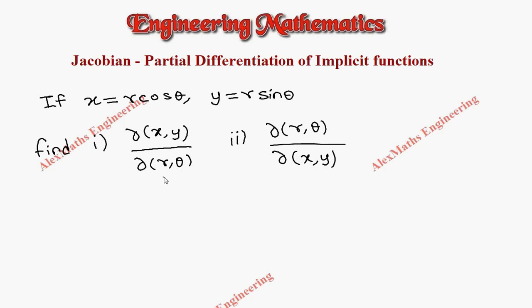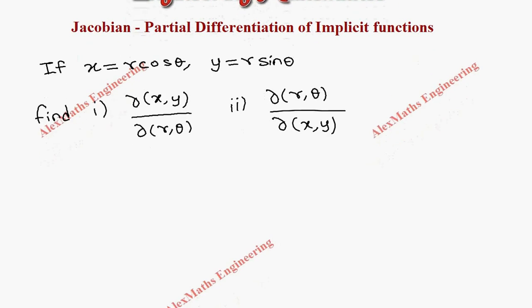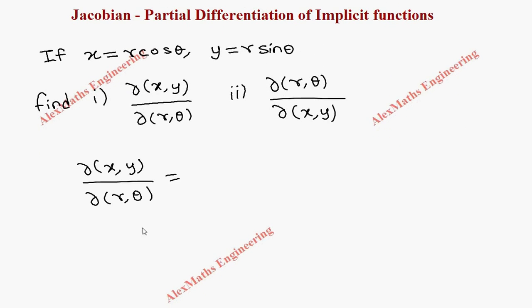The formula for evaluating ∂(x,y)/∂(r,θ) is a 2×2 determinant with ∂x/∂r, ∂x/∂θ in the first row, and ∂y/∂r, ∂y/∂θ in the second row, and this is completely in the determinant.